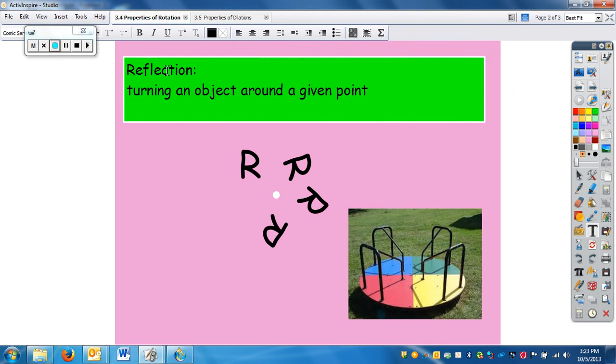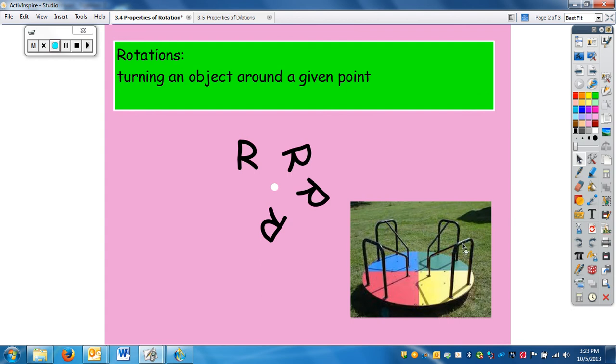I just noticed it says reflection, so let's change that to rotation. Rotations is turning an object around a given point. If you think of a merry-go-round, if you're standing on the outside, you're turning around a point in the middle. Everything that rotates—a wheel, a merry-go-round, a clock—they all turn around a given point. Just like this letter R is rotating around this white point right here. That is the center of rotation. All rotations have a center, so your first thing is to identify the center.